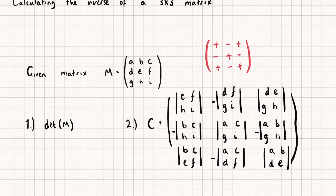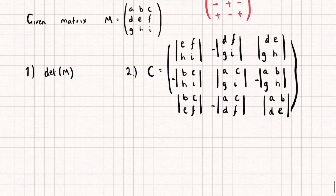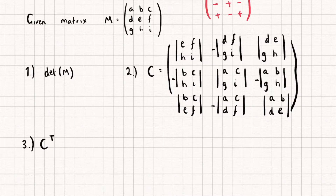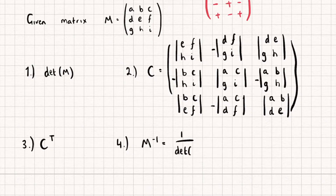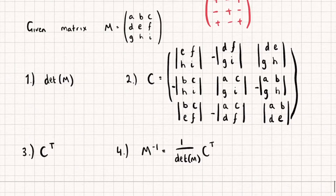We now have to take the transpose of the cofactor matrix. So the third step is to take the transpose of the cofactor matrix — we call this the adjoint matrix, but we just need to know we take the transpose of that. Then finally, we multiply it by one over the determinant to get the inverse. So the inverse of matrix M is 1 over the determinant multiplied by the transpose of the cofactor matrix.